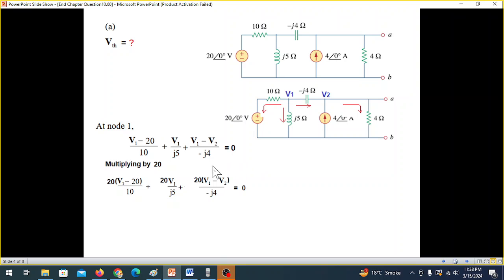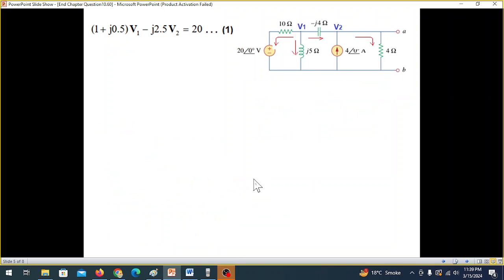And we can solve this. We multiply by the LCM 20. And I hope you can follow these steps. The only point you have to keep in mind that 1 over J can be written as minus J. And 1 over minus J can be written as plus J. So that is what I have used here. And simplifying, further simplifying, this becomes our equation number 1.